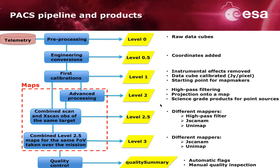Starting from Level 2 up to Level 3 products, we have maps at different levels. At Level 2, we have the high-pass filter map, and we'll see in detail what that means. This is the first science-grade product, and this product is suited just for point sources.